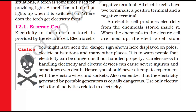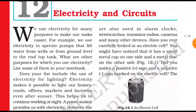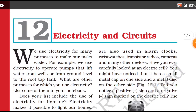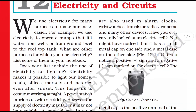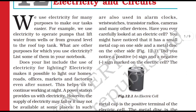12.1 Electric Cell. Electricity to the bulb in the torch is provided by the electric cell, which we have just talked about. Electric cells are also used in alarm clocks, wristwatches, transistor radios, cameras, and many other devices.